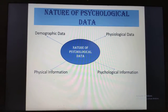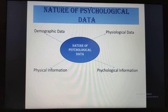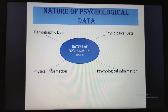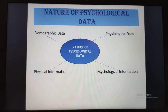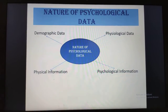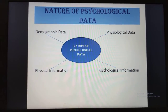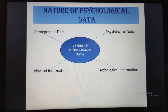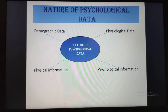As you can see on this slide, there are various natures of psychological data highlighted. The different types of data that psychologists normally collect are demographic information, which includes personal information like name, age, gender, birth order, education and occupation.